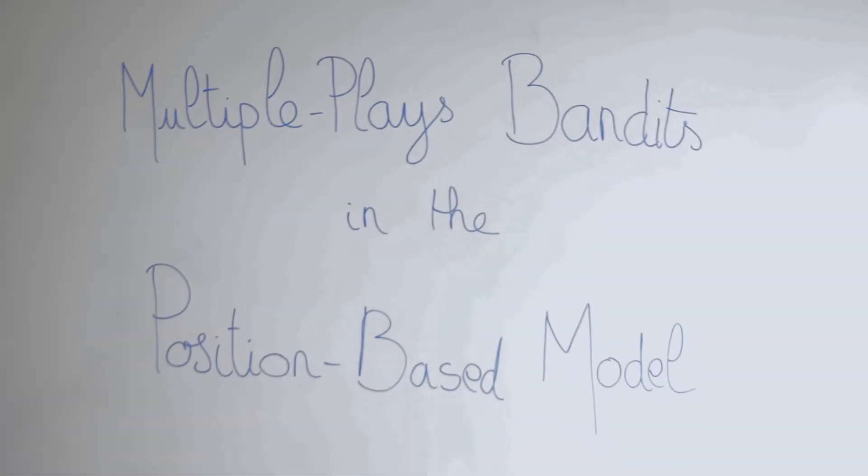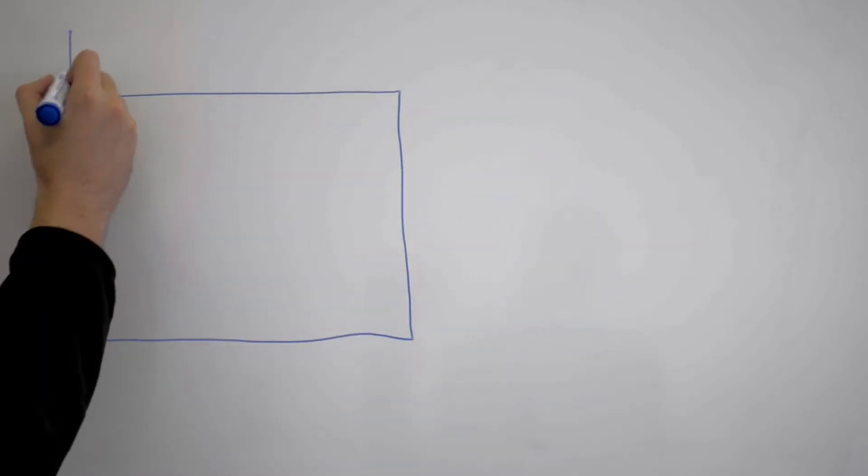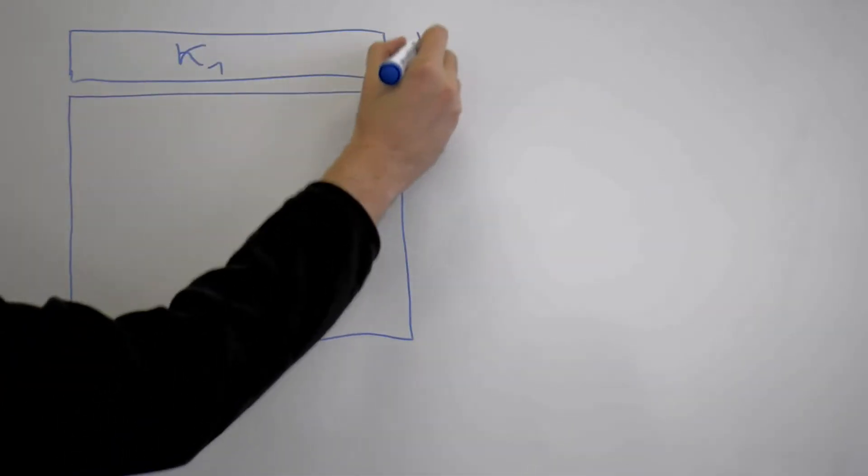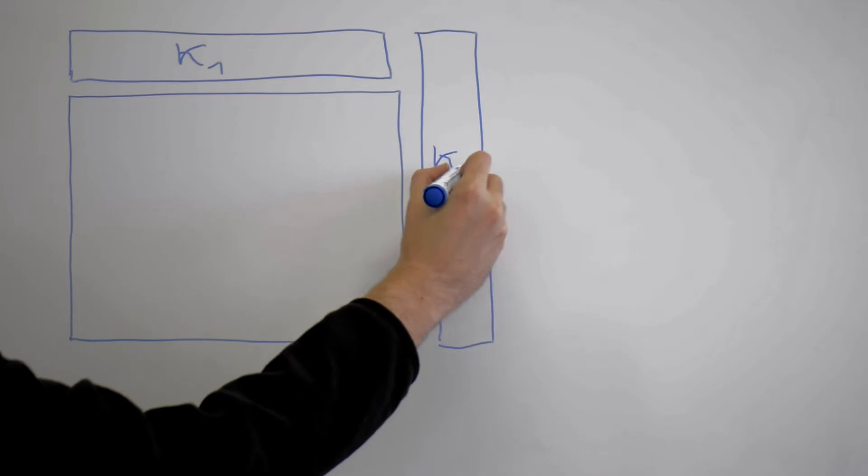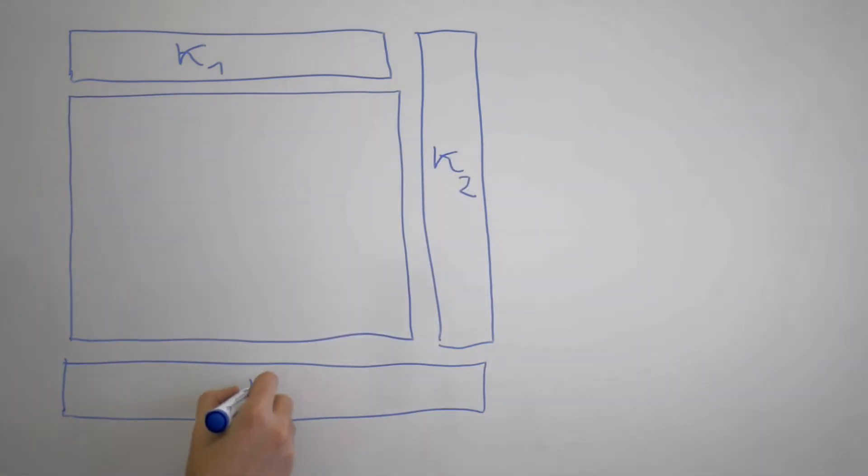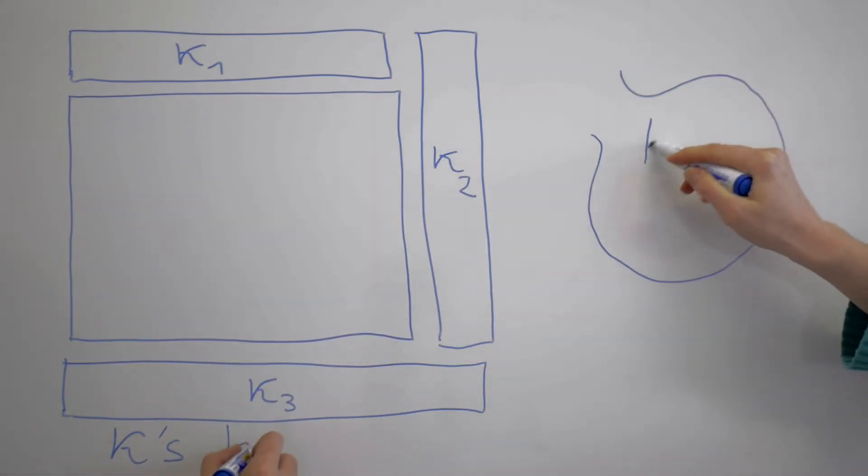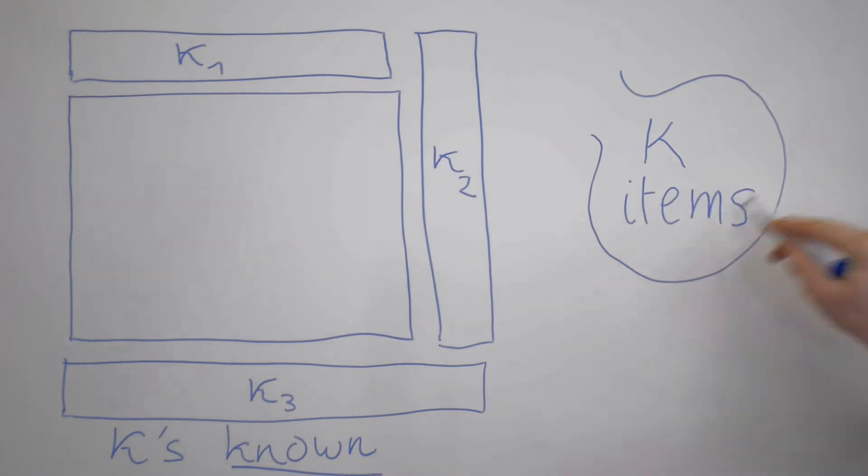Multiple play bandits in the position-based model. In the context of online advertising, one wants to build a web page containing ads in different locations whose probability of click, kappa L, is known. To do so, she uses a catalogue of K items whose click-through rate, theta K, is unknown.